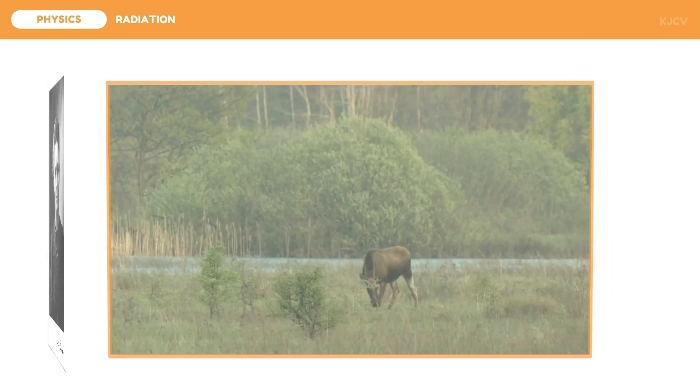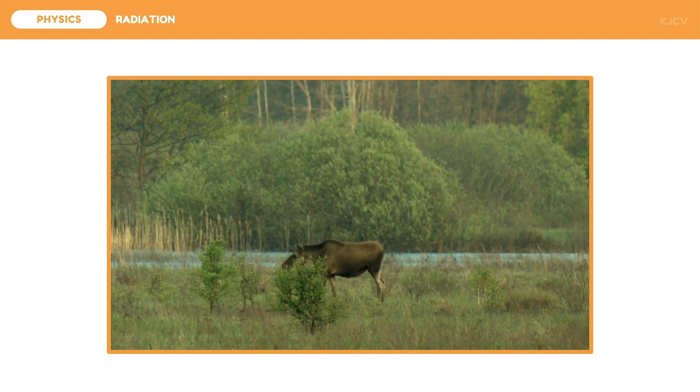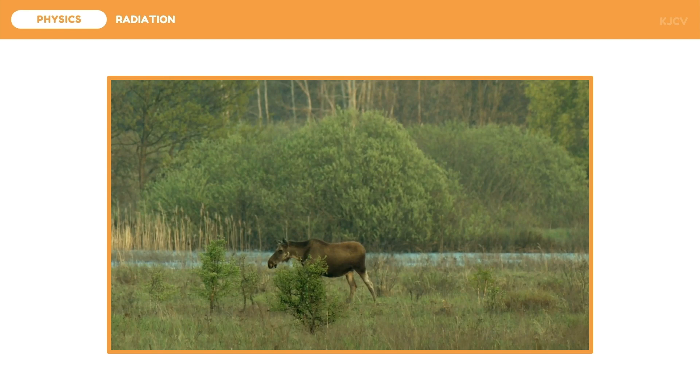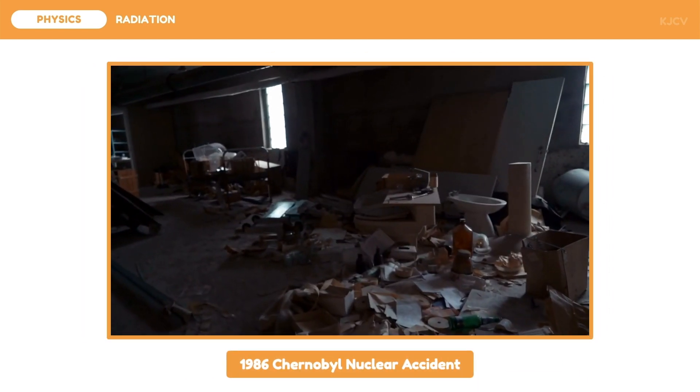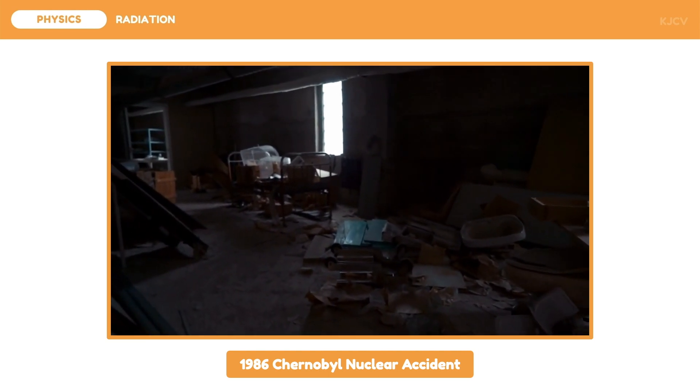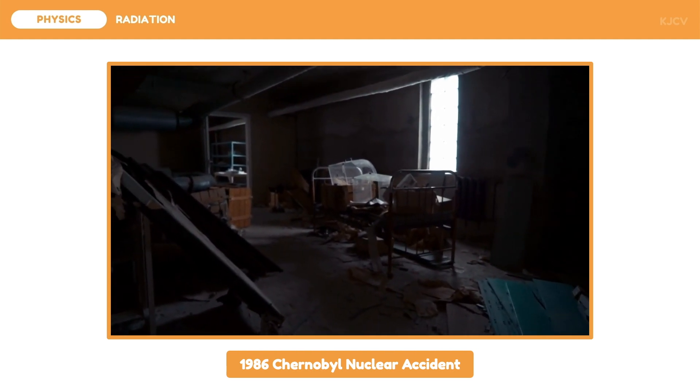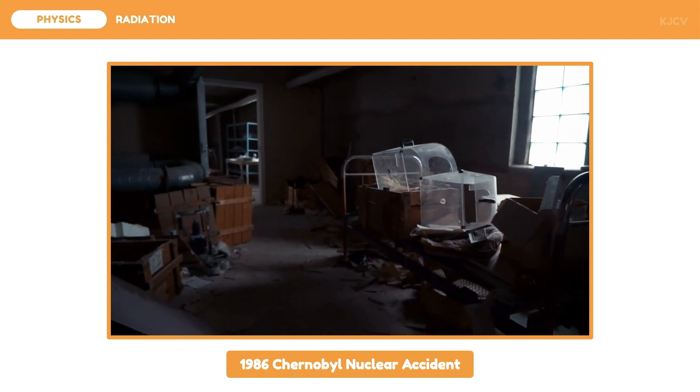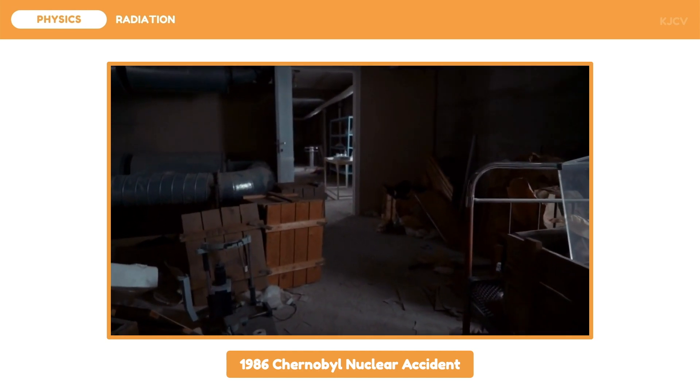Even her coffin is lined with lead so that the radiation will not emanate outside to affect others. Some organisms may appear normal but are highly radioactive. In fact, the animals and plants in Chernobyl are mutants. This is due to the 1986 Chernobyl nuclear accident in Pripyat, Ukraine. This nuclear accident was due to reactor design flaws and serious breach of protocol during simulated power outage safety test.